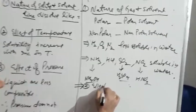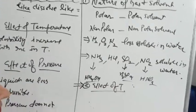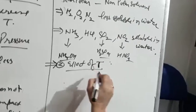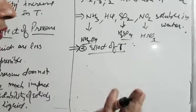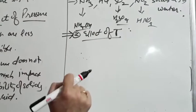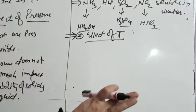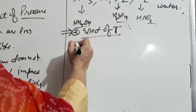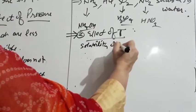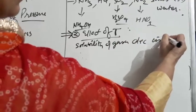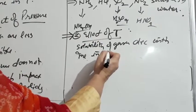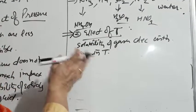The second factor for gas solubility is the effect of temperature. When you open a cold drink, the colder it is, the more carbonic acid (CO2) is dissolved in it. If you heat it, all the gas escapes and the taste becomes flat. So the solubility of gases decreases with increase in temperature. As temperature increases, the solubility of gases decreases.